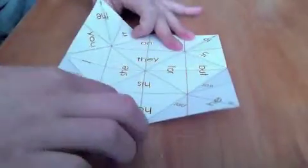The first thing you want to do is fold on the dotted line in the middle, so just folding it in half. Then you want to open it up and fold it in half the other direction. Open it up again.